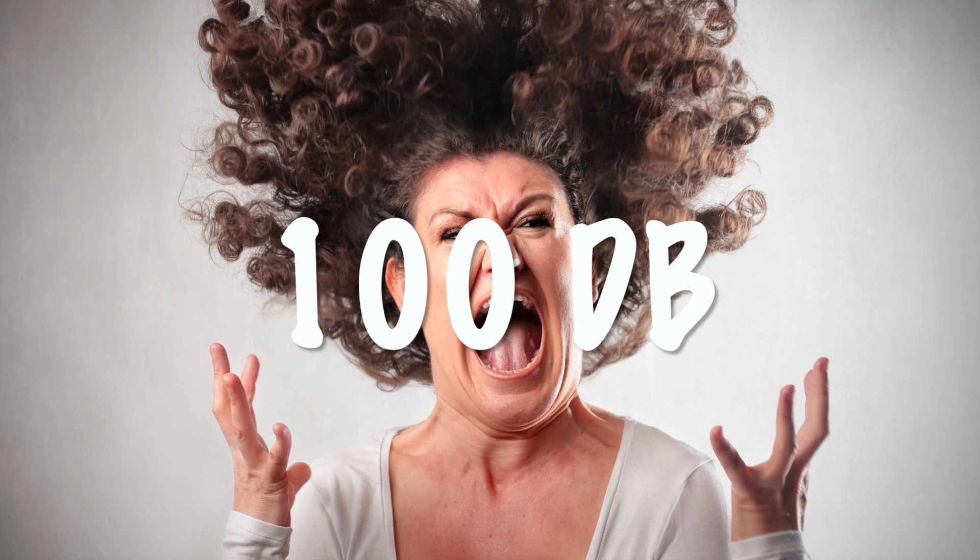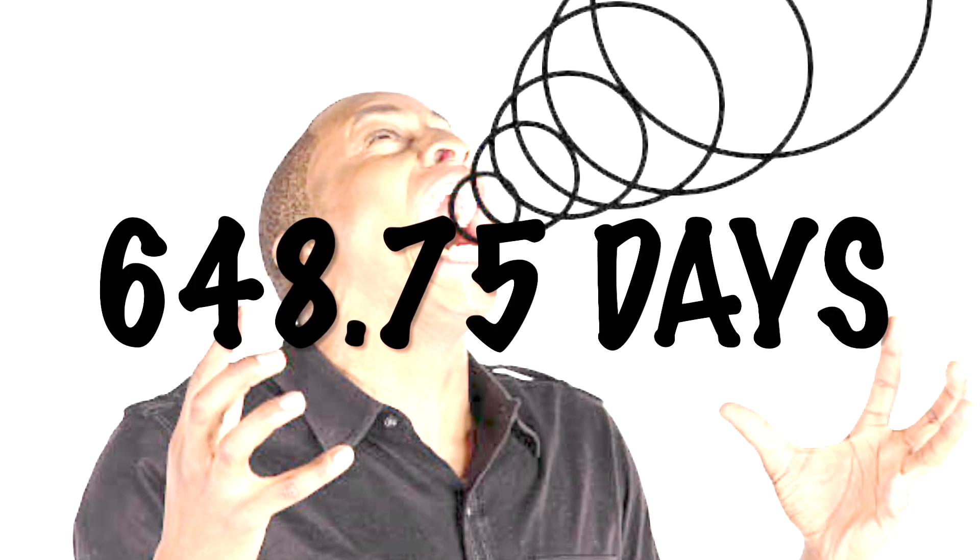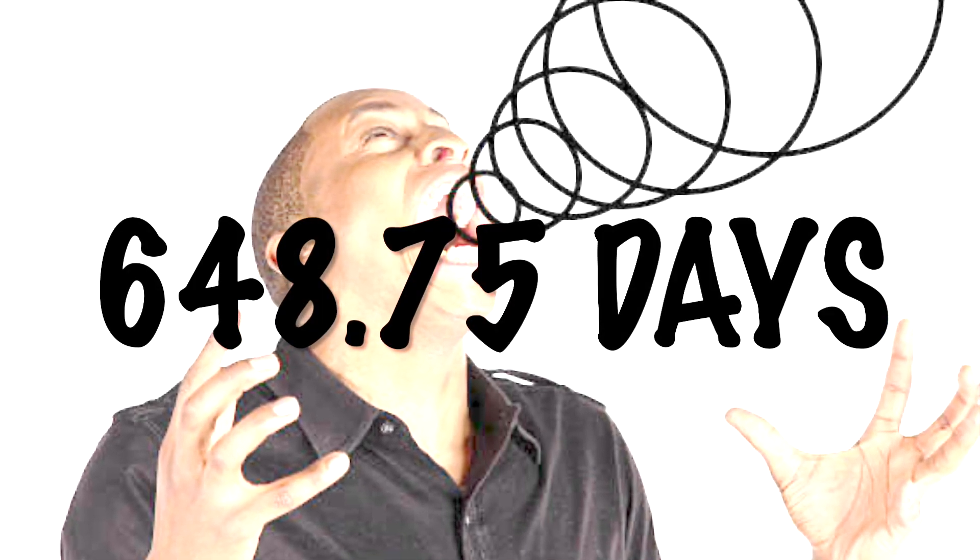So maybe the better question is if I'm screaming at 100 decibels, how long do I have to scream at it for? We'll take this equation, rearrange it so that it's solved for time, and we'll find that in order to cook the chicken screaming at 100 decibels you have to scream at it for about 649 days, or just a little bit shy of two years. And there you go, by the time you're done screaming at it it'll probably have rotted away.